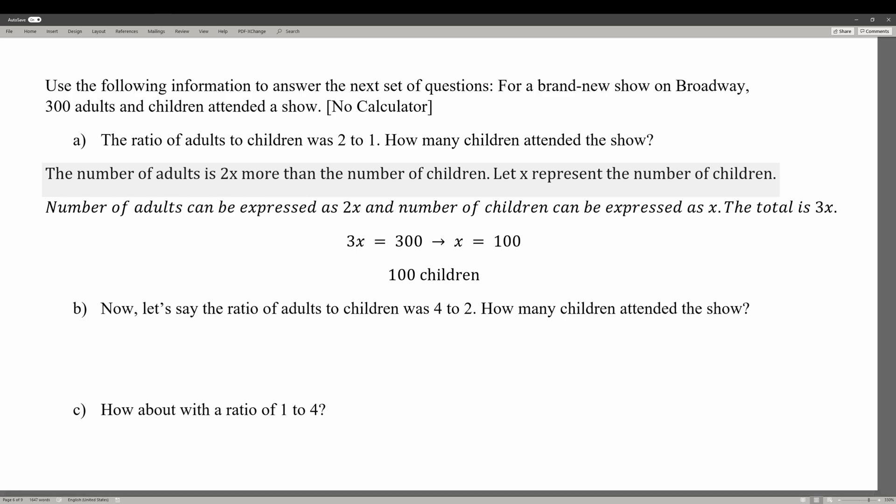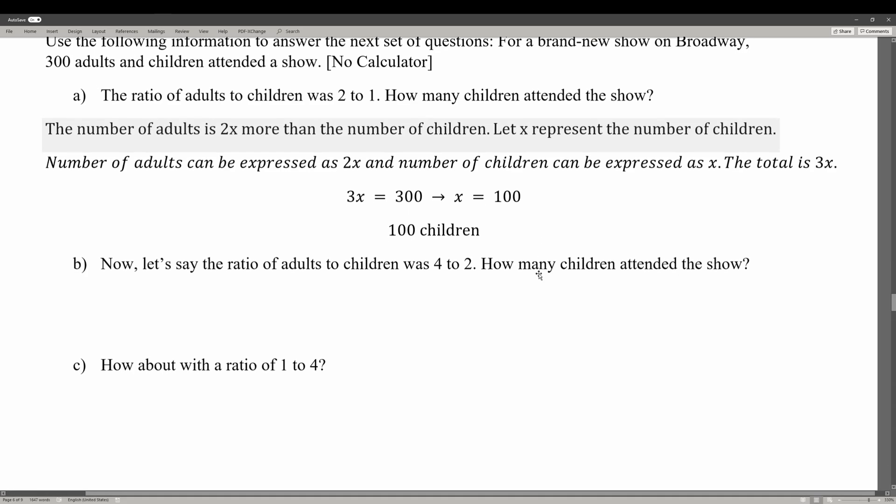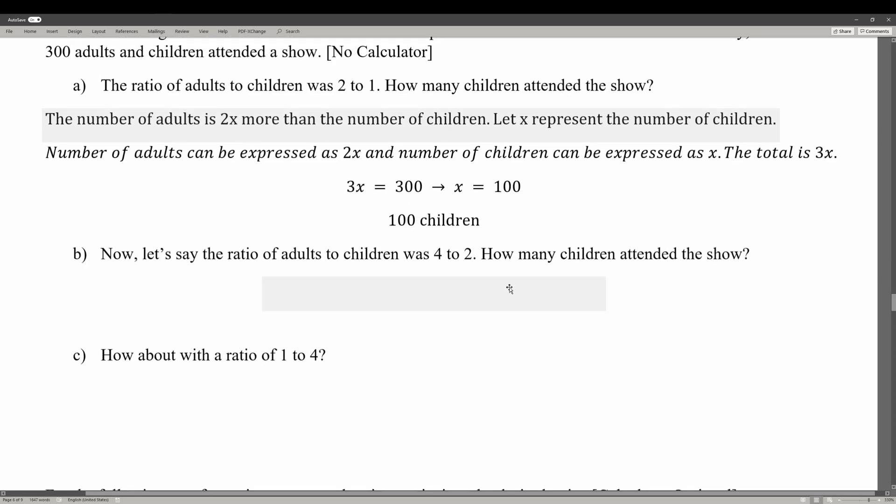Now let's say that the ratio of adults to children was 4 to 2. How many children attended the show? In this case, what we do is try to find a way to simplify that ratio. In the first one we couldn't do it. However, this one is just going to simplify to 2 to 1. So in this case, it's actually going to be the exact same answer.